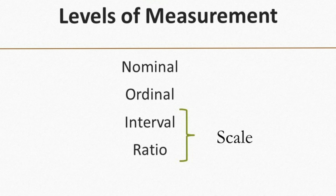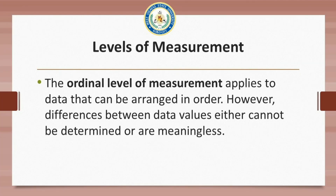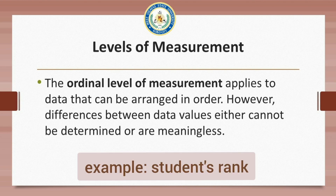A variable may be nominal, ordinal, or scale. Scale variables may either be interval or ratio. The nominal level of measurement applies to data that consists of names, labels, or categories — there are no implied criteria by which the data can be ordered from smallest to largest. Color is an example of a nominal variable. The ordinal level of measurement applies to data that can be arranged in order; however, differences between data values either cannot be determined or are meaningless.